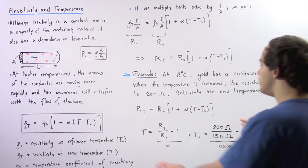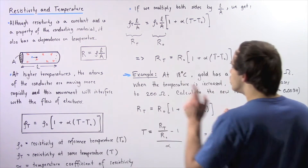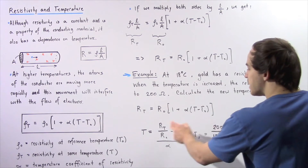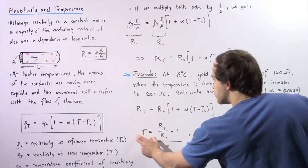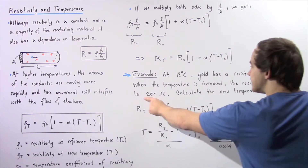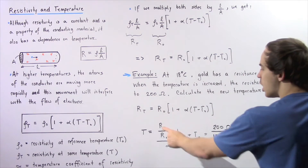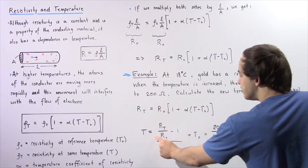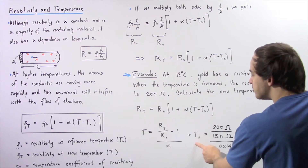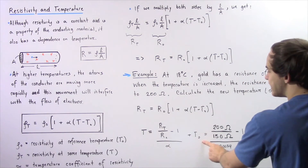So we basically take this equation, rearrange it, and solve for T. The temperature at which our resistance is 200 ohms is equal to R_T divided by R₀ minus 1, divided by α, plus T₀.